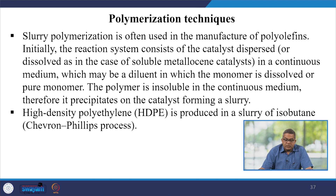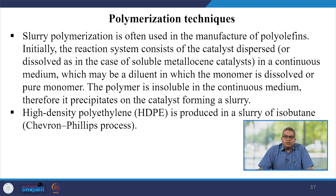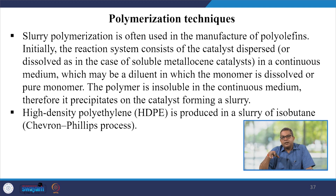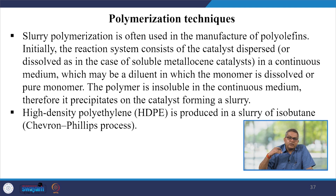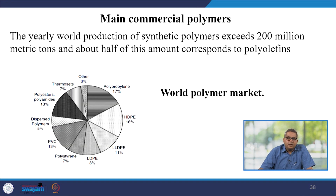Slurry polymerization is often used in the manufacture of polyolefins. The reaction system consists of catalyst dispersed or dissolved — as in the case of soluble metallocene catalyst — in a continuous medium which may be a diluent in which the monomer is dissolved, or pure monomer; the polymer is insoluble in the continuous medium and precipitates on the catalyst forming a slurry. HDPE is produced in a slurry of isobutane in what is called the Chevron Phillips process. Now let us have a brief discussion about the main commercial polymerization processes.